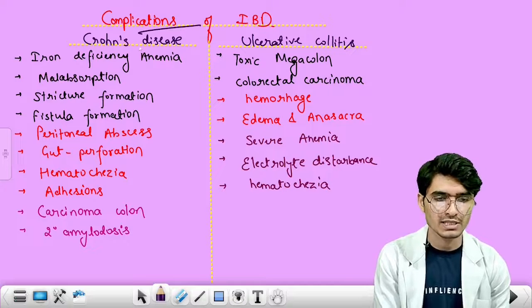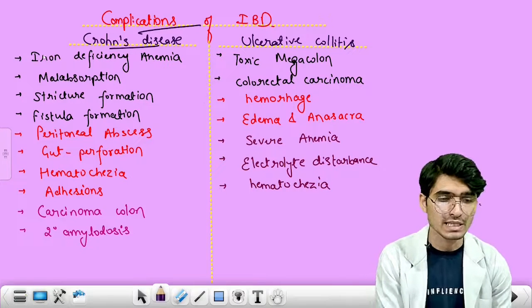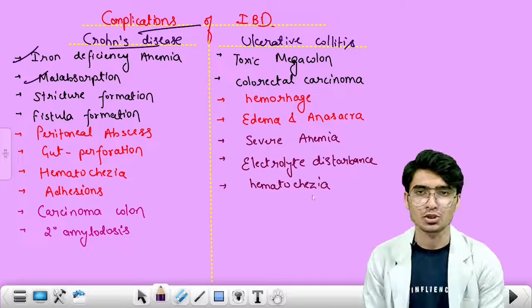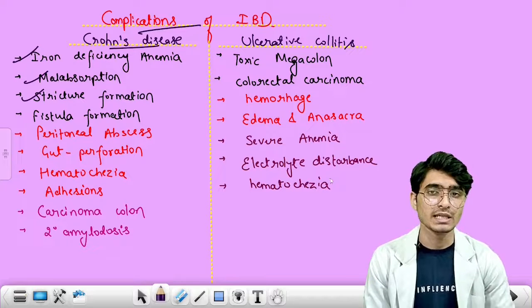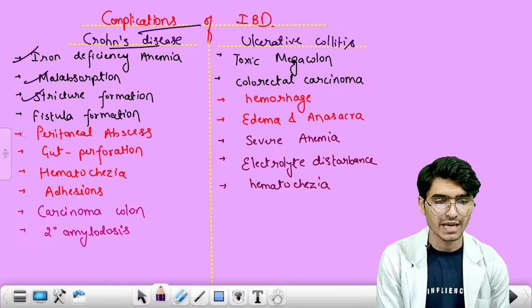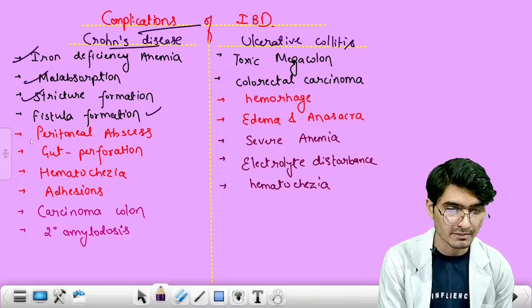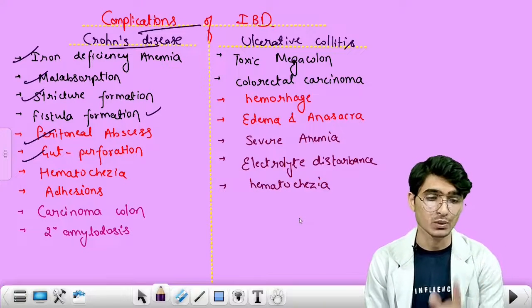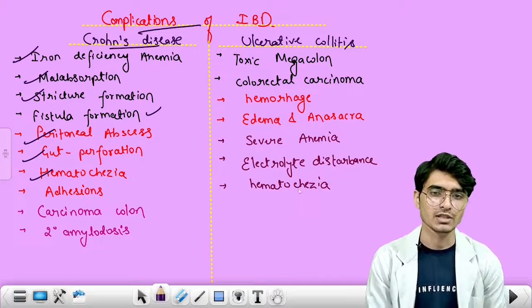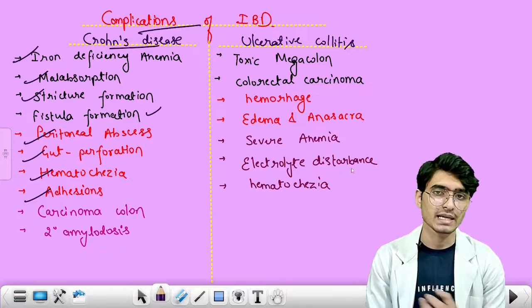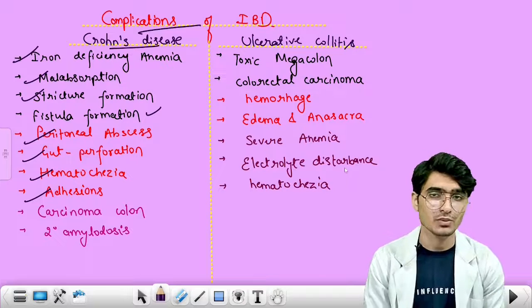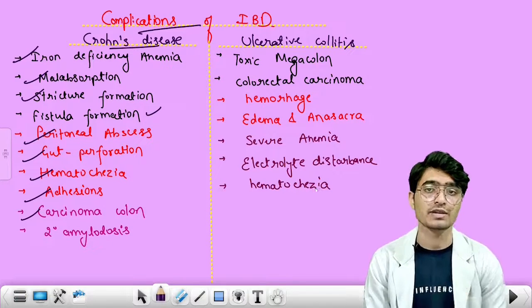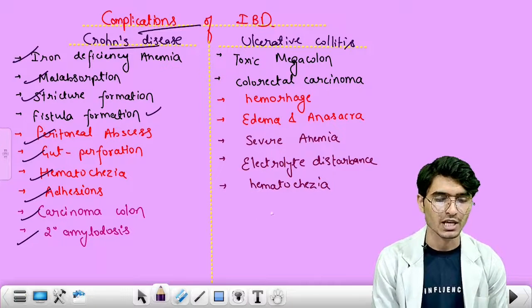Complications of Crohn's disease: iron deficiency anemia due to malabsorption; malabsorption syndrome itself; stricture formation causing the string sign of Kantor on radiology; various fistulae; peritoneal abscess; gut perforation due to transmural involvement causing peritonitis; hematochezia — blood in stools; adhesions from sticky serosa causing ureteral and bowel obstruction; increased risk of colorectal carcinoma; and secondary amyloidosis.